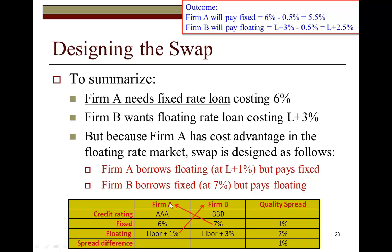However, A will wind up paying only 5.5%. When A receives the 7%, it pays only 5.5%, which equals how much it would have had to pay minus its share of the quality spread difference. The unpaid amount of 1.5% is still left with Firm B, meaning that when Firm B receives this LIBOR plus 1%, coupled with the unpaid 1.5% that it still retains, it will wind up being LIBOR plus 2.5%.